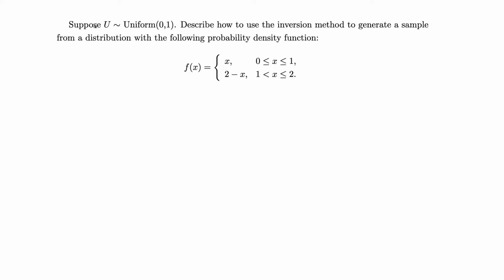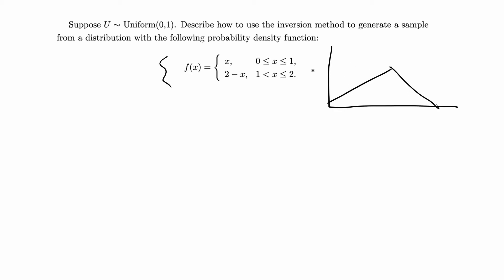This problem says: suppose u is uniformly distributed 0 to 1, describe how to use the inversion method to generate a sample from a distribution with the following PDF. It has a stepwise PDF. This type of PDF is called a triangular distribution because when you plot the PDF it basically takes the shape of a triangle.